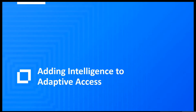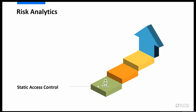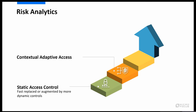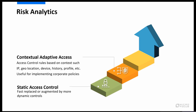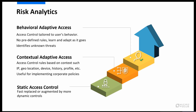Let's dive into how we're adding intelligence to adaptive access. We started with static access controls — think of this as your typical static policy. Then we moved into contextual access, looking at things like IP addresses, locations, and devices. Now where we're getting into is behavioral adaptive access, tailored to an individual user's behavior. This means fewer predefined rules, less initial overhead, and fewer resources required upfront. We learn and adapt as we go.